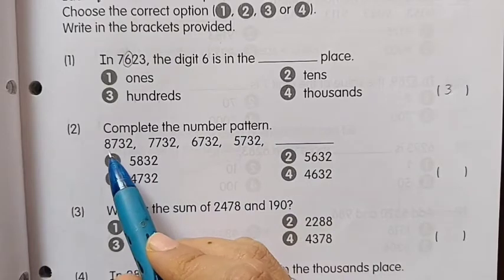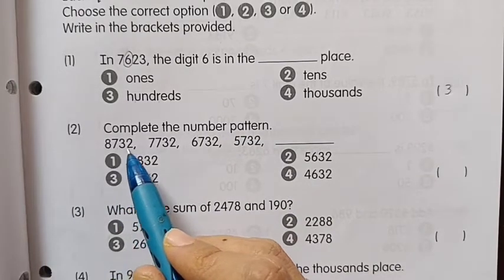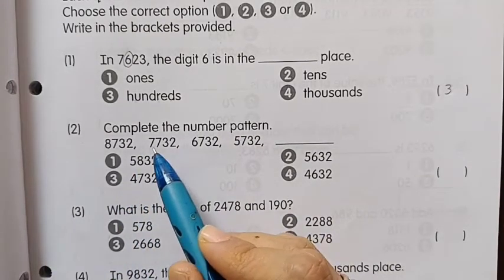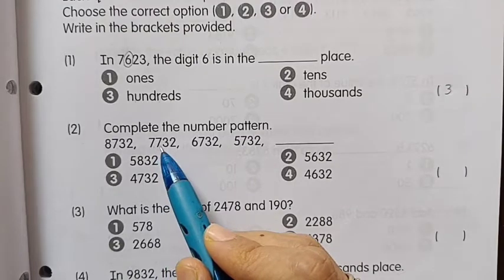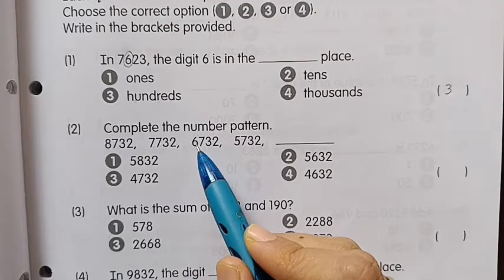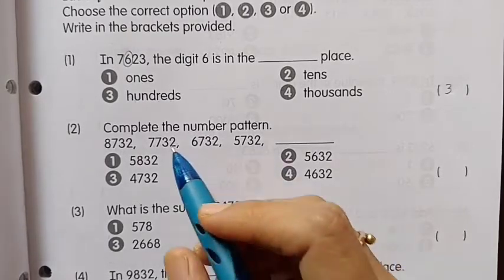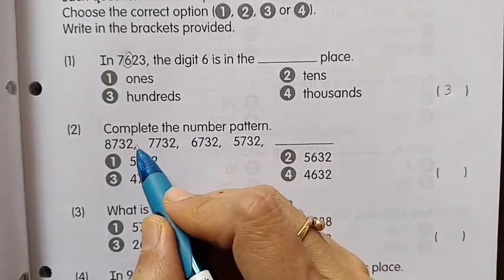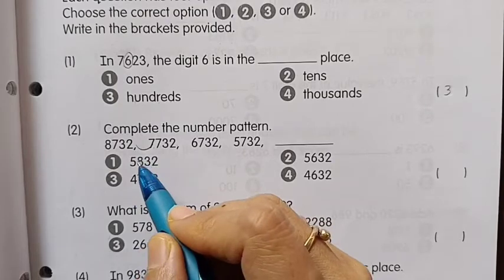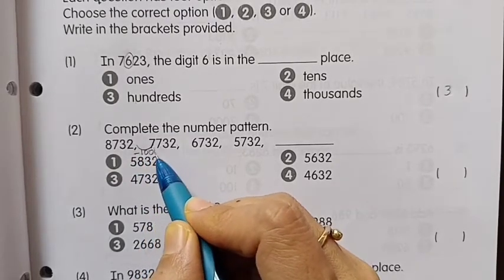Number 2: Complete the number pattern. 8732, 7732, 6732, 5732. Look at these two numbers, their difference is 1000.